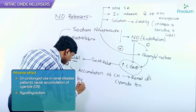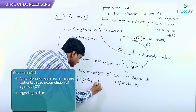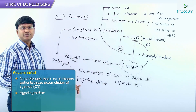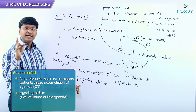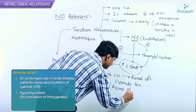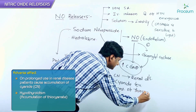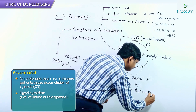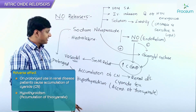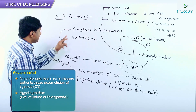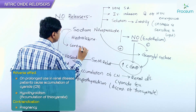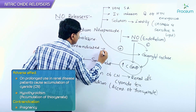Another important adverse effect of sodium nitroprusside is hypothyroidism. It can result in hypothyroidism due to the accumulation of thiocyanate within the thyroid gland. Thiocyanate accumulation within the thyroid gland leads to hypothyroidism.